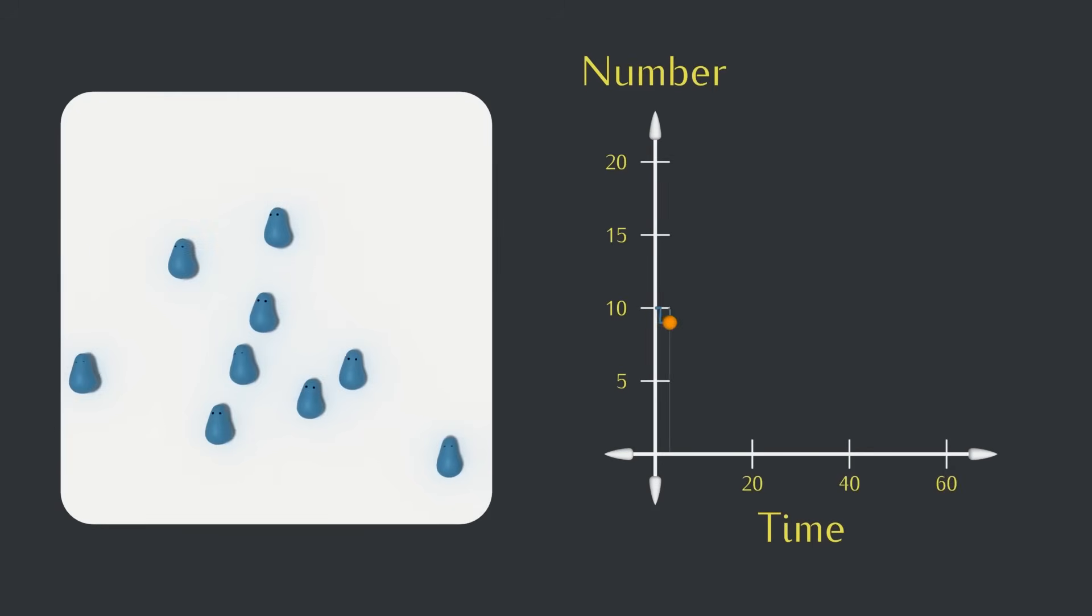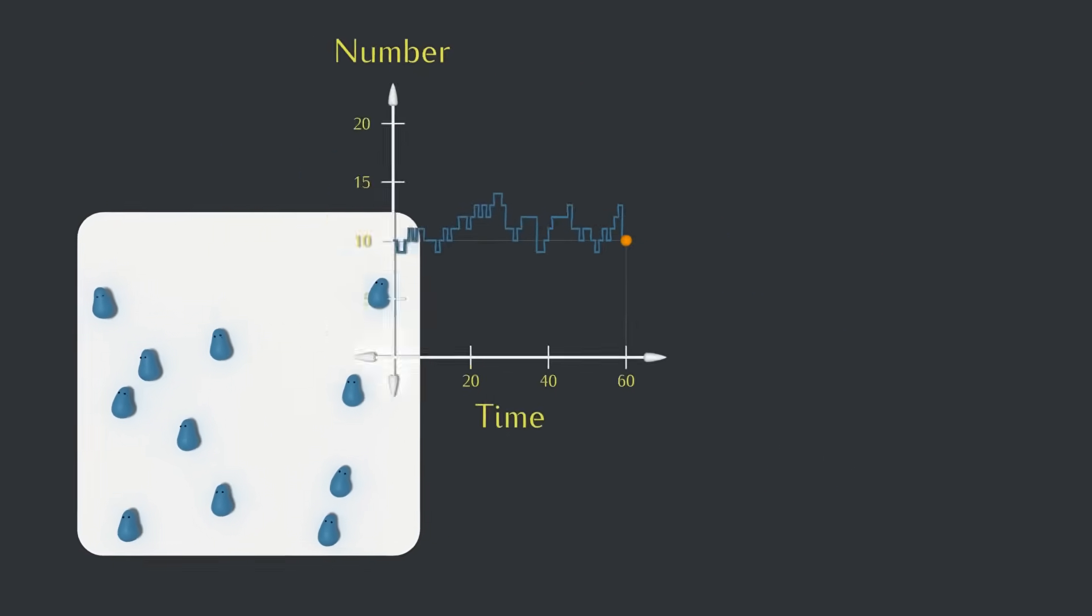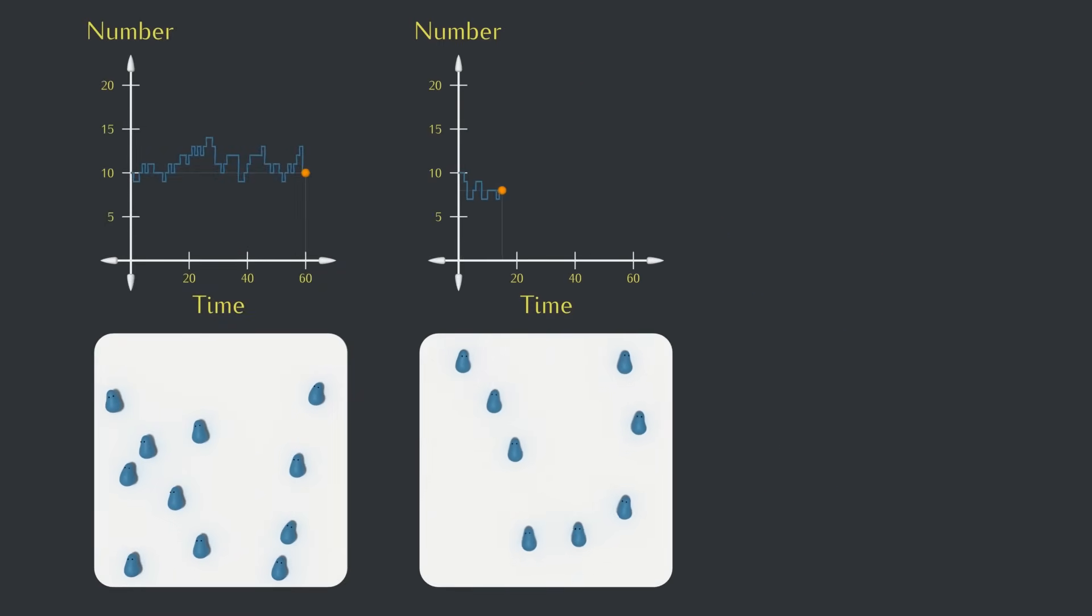We'll actually have two kinds of graphs. The first kind will track the number of creatures over time in a simulation. These number over time graphs will be a bit different each time we run a simulation, even if the settings for that simulation are exactly the same.